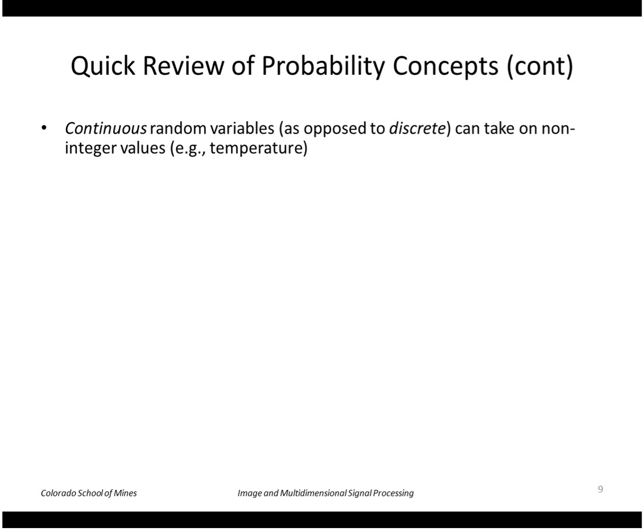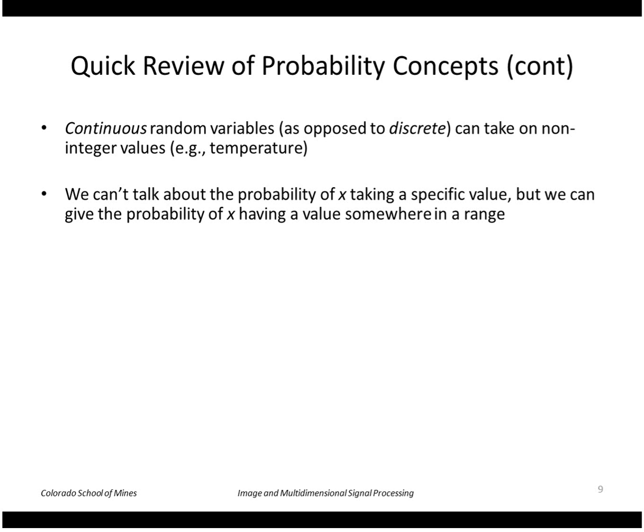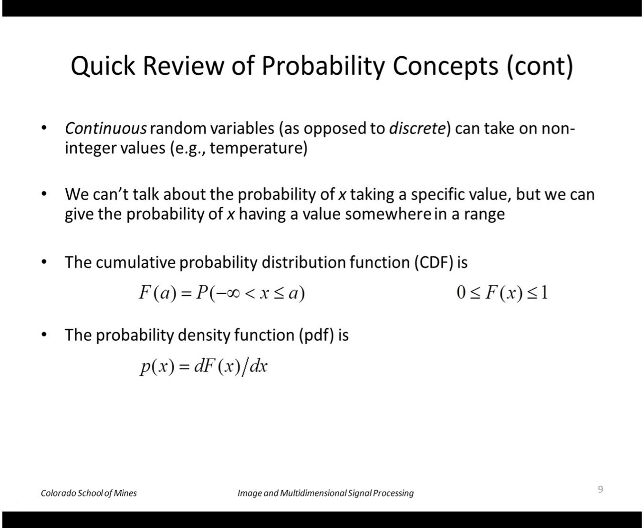The idea of continuous random variables are variables that can take on continuous values. In this case, we can't talk about the probability of having a specific value, but we can give the probability of a range, for example between 0.1 and 0.2. We can also express the cumulative probability distribution function as the probability that our random variable x takes on any value from minus infinity up to some value a. The probability density function, or PDF, is the derivative of that with respect to x. The probability that x is between some a and some b is f of b minus f of a, or we could integrate the PDF from a to b.